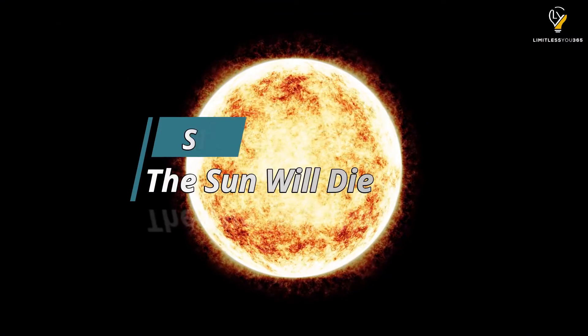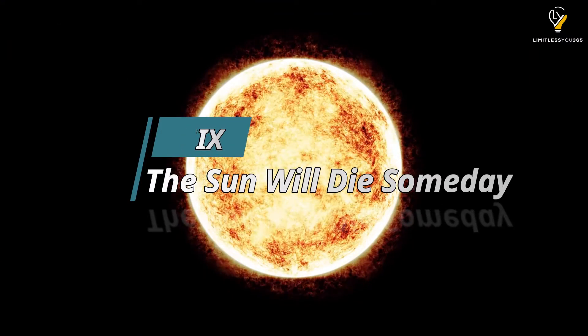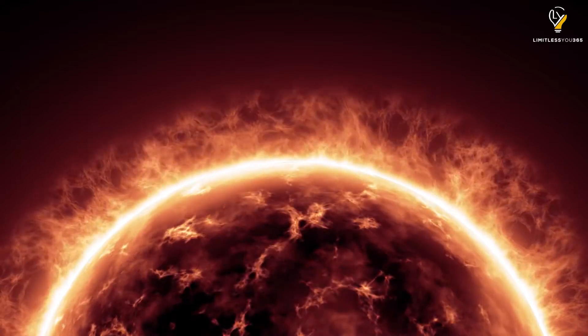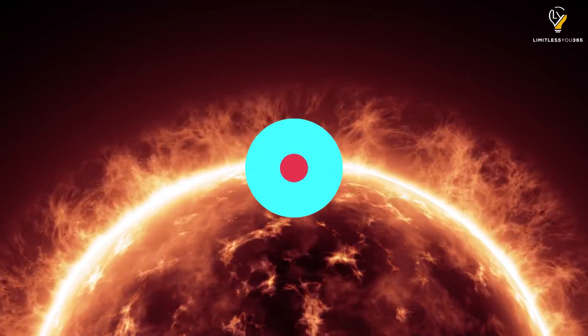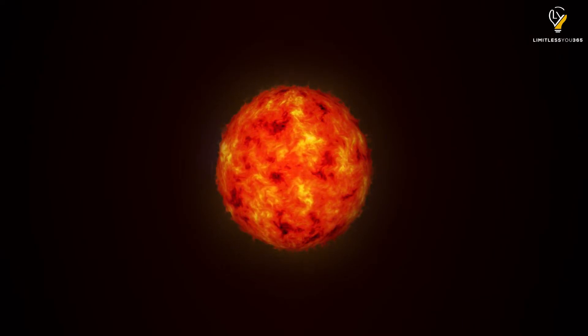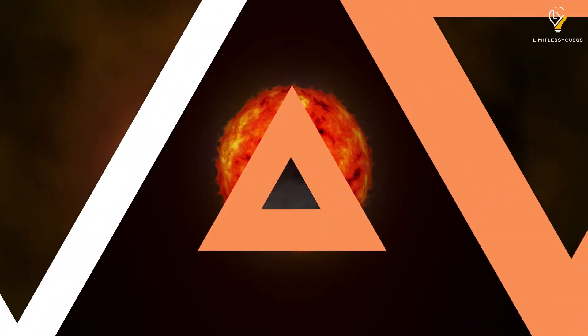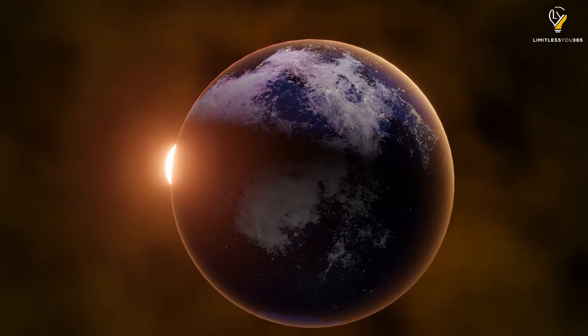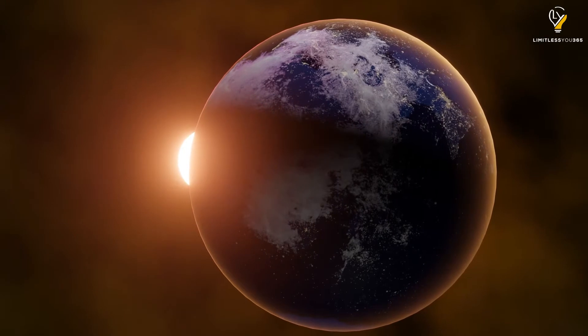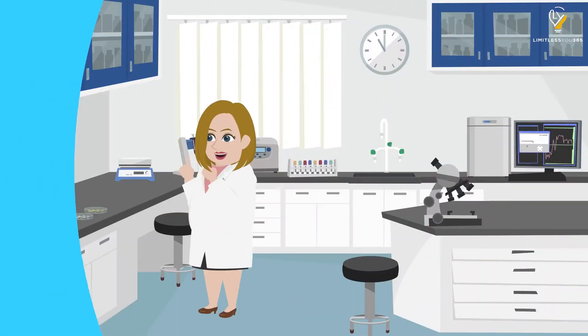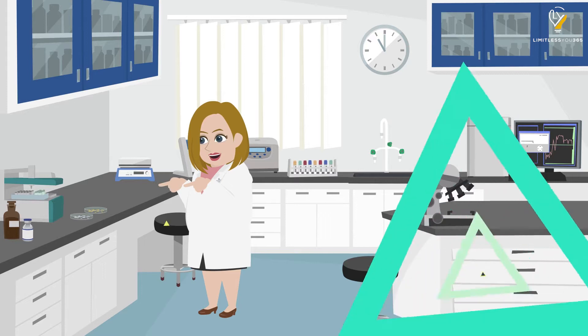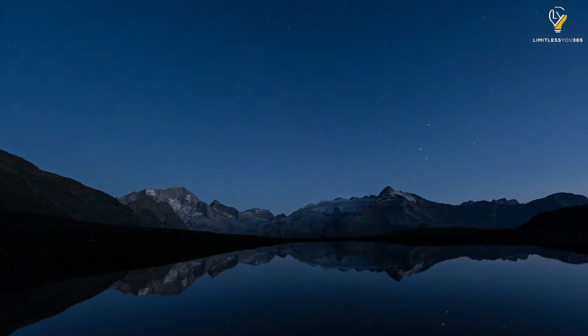Number six: The sun will die someday. The sun might be huge and powerful right now, but it's not going to last forever. In about 5 billion years, it will have run out of fuel and start to die. It'll grow into a red giant star and expand so much it will actually consume and destroy the Earth. Luckily, by that point, we'll probably have figured out a way to get off this rock. We might even be long gone before then.